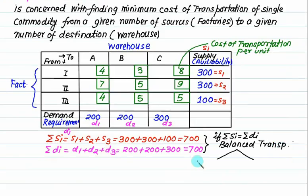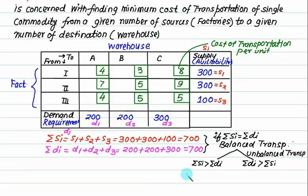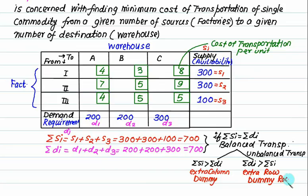If the supply is more than demand, or the total demand is more than total supply, it is called an unbalanced transportation problem. The first step is to convert the unbalanced problem into a balanced one by adding an extra dummy column or an extra dummy row, depending on the situation. This is done just to balance the summation of sigma Si and sigma Di — that is, supply must equal demand.